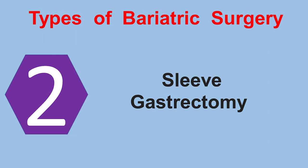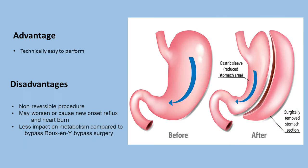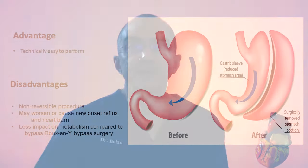Sleeve gastrectomy is a partial gastrectomy in which the majority of the greater curvature of the stomach is removed and a tubular stomach is created. The sleeve gastrectomy is technically easier to perform and is viewed as less drastic by patients. However, it is not a reversible procedure, may worsen or cause new onset reflux and heartburn, and has less impact on metabolism compared to Roux-en-Y bypass surgery.